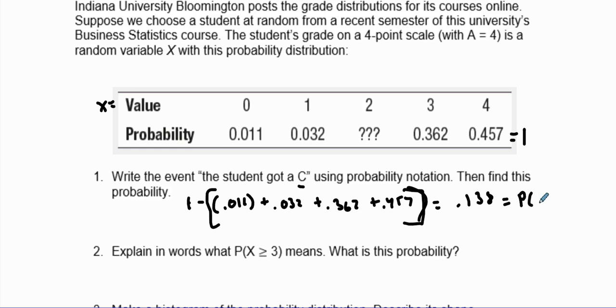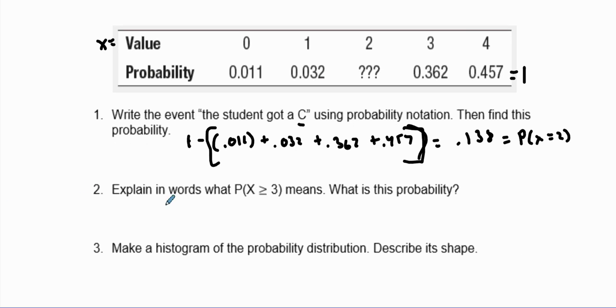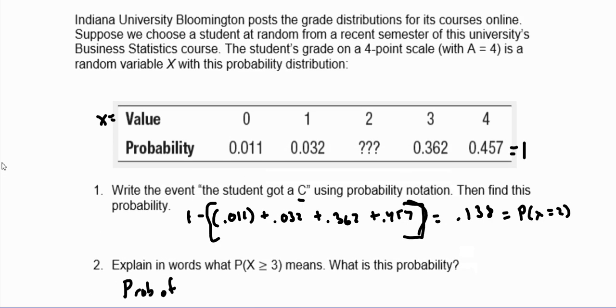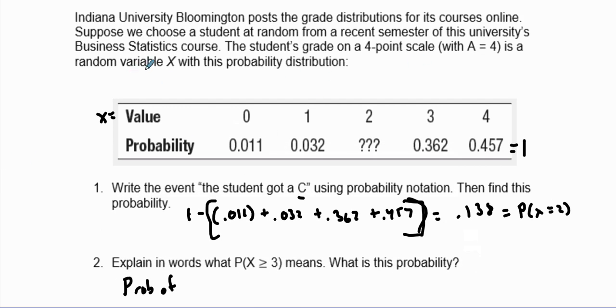Now explain in words what the probability of X being greater than or equal to three means. What is that probability? Well, that would be the probability of a random variable. Suppose a student is chosen, the probability of randomly selecting a student.